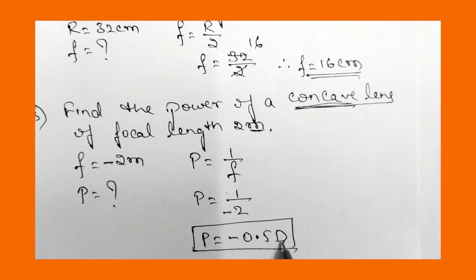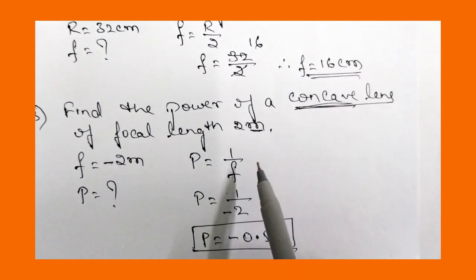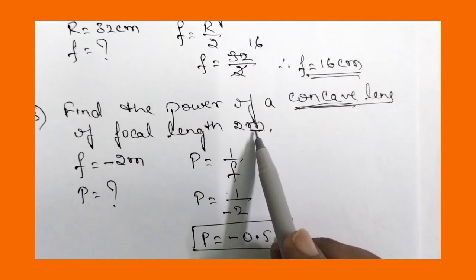If the focal length of a lens is 1 meter, then the power of the lens is 1 diopter. If the focal length is in meters, the power will be in diopters.